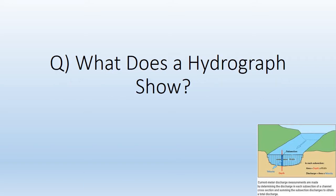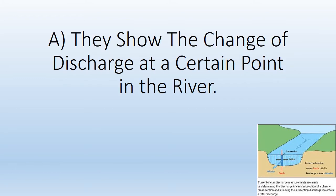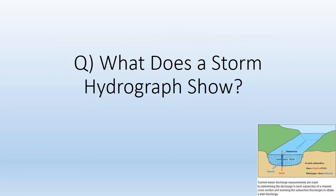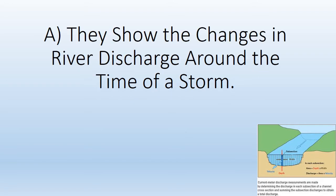What does the hydrograph show? They show the change of discharge at a certain point in the river. What does a storm hydrograph show? They show the changes in river discharge around the time of a storm.